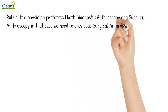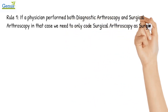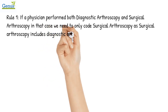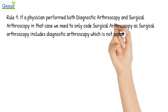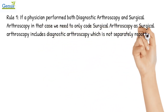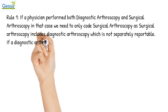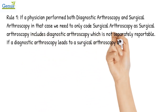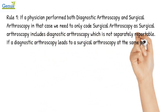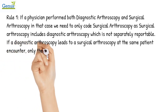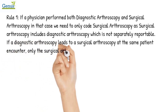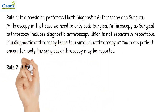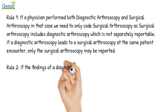Rule 1: If a physician performs both diagnostic arthroscopy and surgical arthroscopy, we need to code only the surgical arthroscopy, as surgical arthroscopy includes diagnostic arthroscopy, which is not separately reportable. If a diagnostic arthroscopy leads to a surgical arthroscopy at the same patient encounter, only the surgical arthroscopy may be reported.